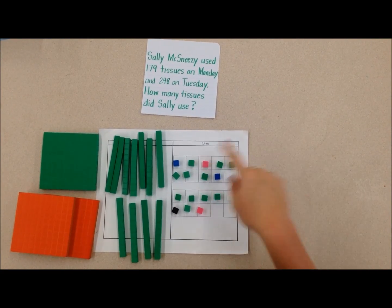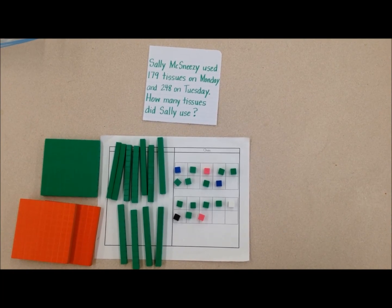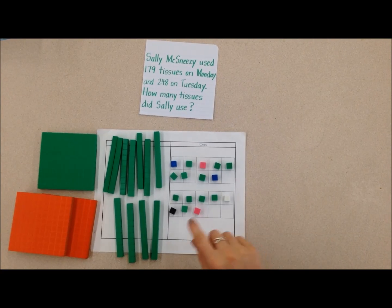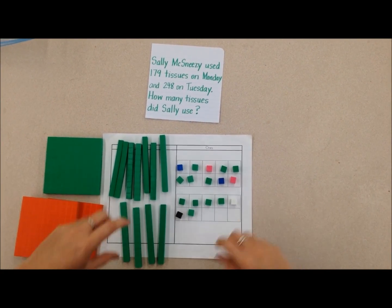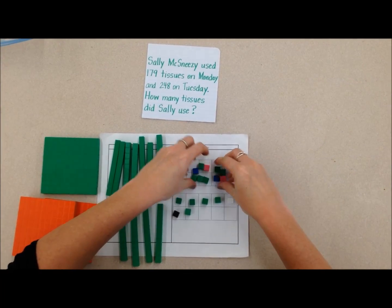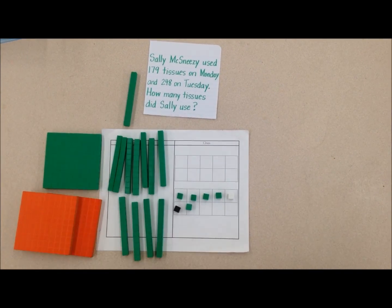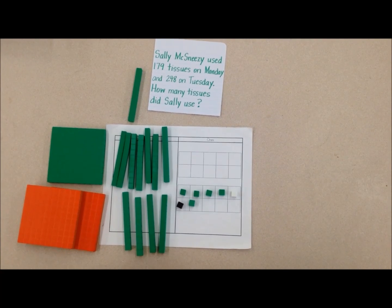Alright, so that looks like I have a lot of ones there, and I know that I can compose a ten, so I can make a ten if I move one of these here, so that now becomes 10, and I can swap these 10 ones for another ten. Okay, so that means I have 1, 2, 3, 4, 5, 6, 7 ones left.